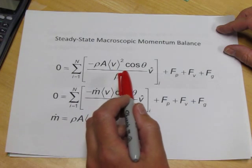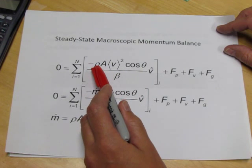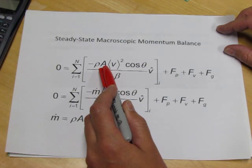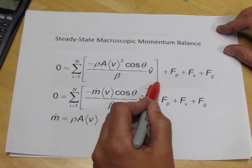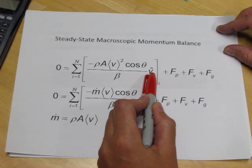So we'll begin by identifying these various terms in the convective term. The density is the density of the fluid. The A is the cross-sectional area of the tube. The velocity is the average velocity in the tube, which is the same for every flow. And the direction of the flow is the same for both the inlet and the outlet condition.